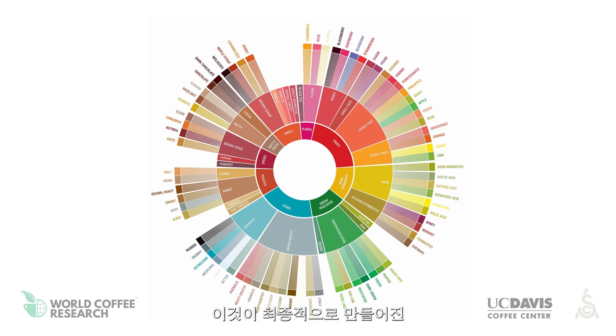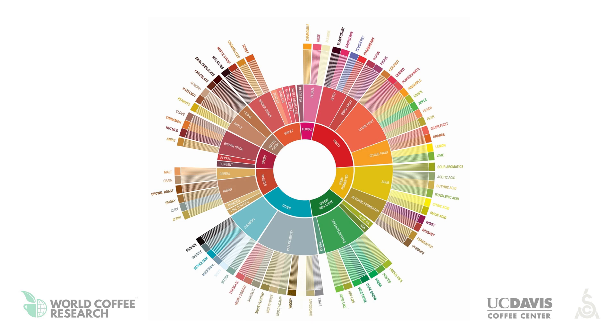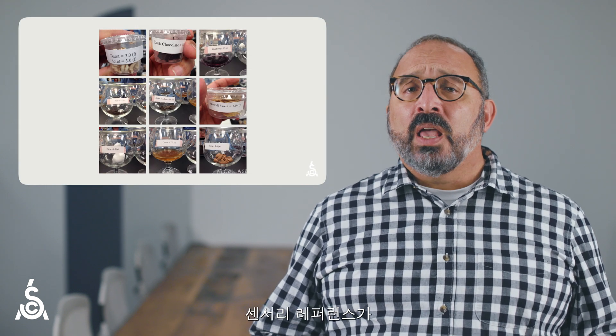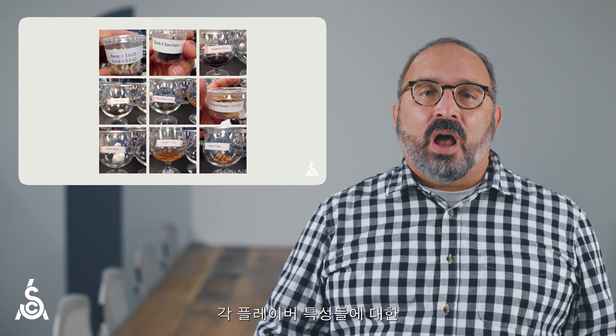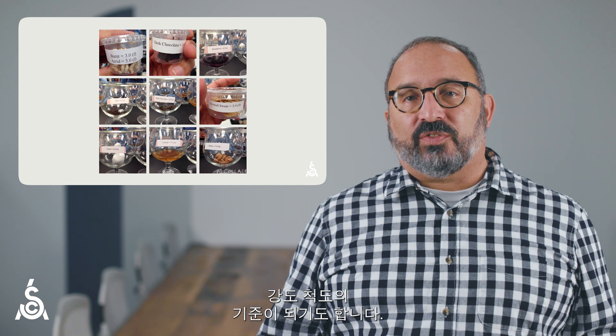Here is the final product: the SCA WCR coffee taster's flavor wheel. The WCR lexicon also includes sensory references for all descriptors. The references are also anchors along an intensity scale for each flavor attribute. Therefore, a sensory reference helps the panelists align on both the qualitative character and the intensity of a particular flavor.